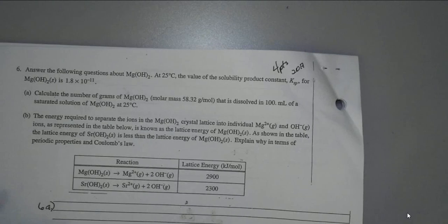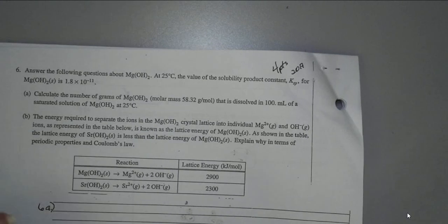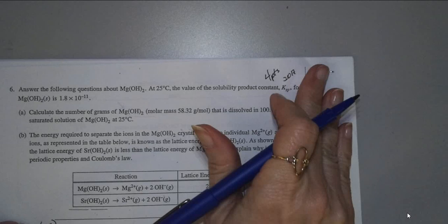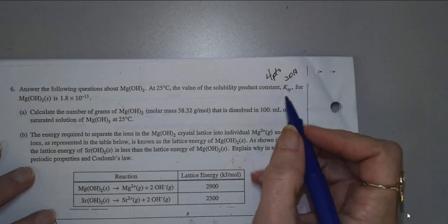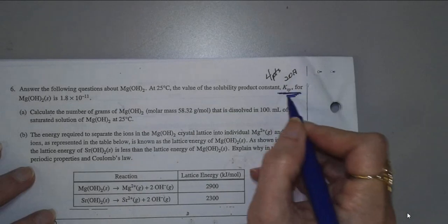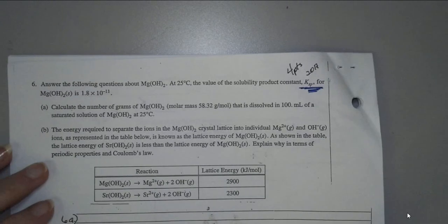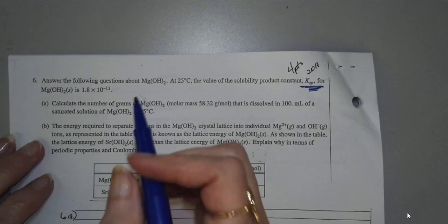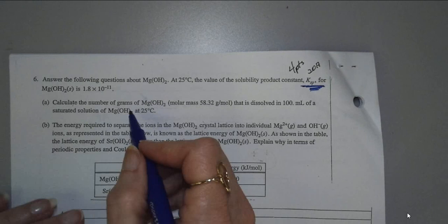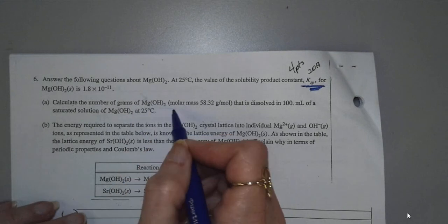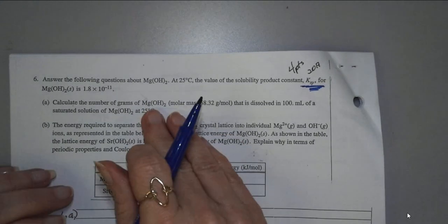First question always is, where do I start? Well, look for clues in the question. When it says the KSP value, you should automatically think, okay, that's going to be equilibrium. So look for things like that that will help you out. Letter A, calculate the number of grams of Mg(OH)2. It says number of grams, and we haven't done that. They've done molar solubility, which is basically the molarity.